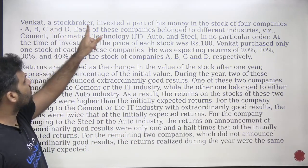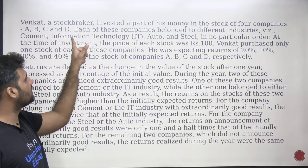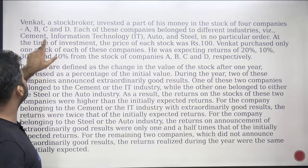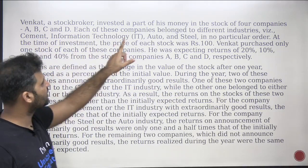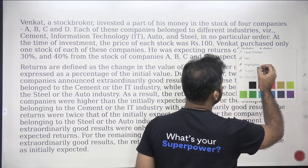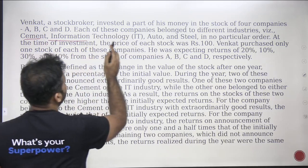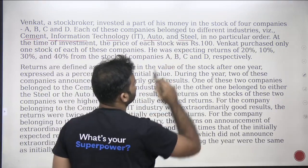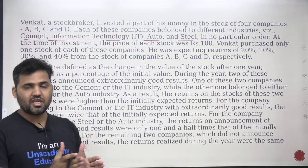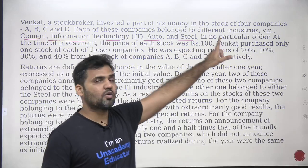It says Venket, a stock broker, invested a part of his money in the stock of four companies — A, B, C, and D. Each of these companies belongs to different industries: C-Mate, Information Technology, Auto, and Steel. So there are four industries this set is talking about. Which company — A, B, C, or D — belongs to which industry we do not know, because it's mentioned in no particular order.